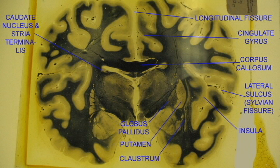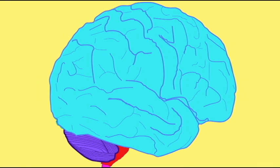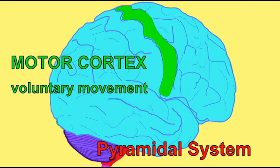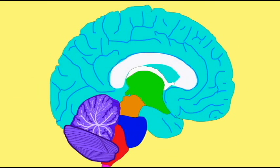In addition to the voluntary control over skeletal muscle enabled by the motor cortex and the pyramidal system, there is an extrapyramidal system which allows for involuntary control of skeletal muscle movements.